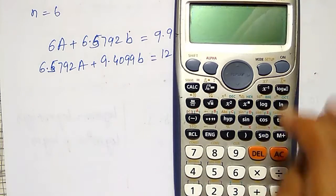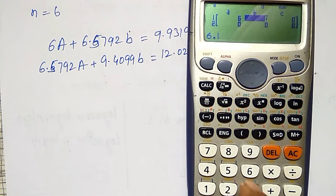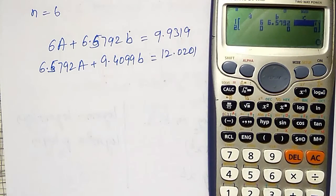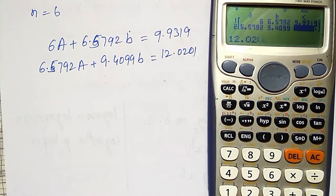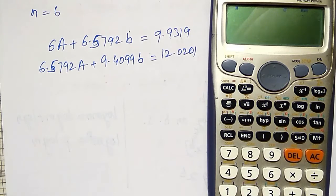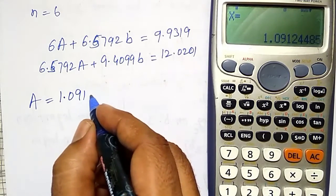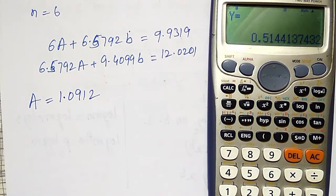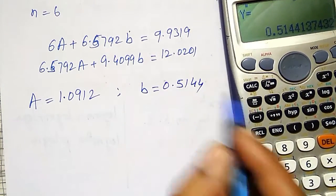Using these two simultaneous equations I can solve for capital A and small b. In the calculator, equation mode, that is option number 5. First option I will select. First is 6, 6.5792, and 9.9319. And second is 6.5792, 9.4099, and 12.0201. And then I will get x value, x is capital A. Capital A is 1.0912. And equal to y, but small b in my problem, that is 0.5144.